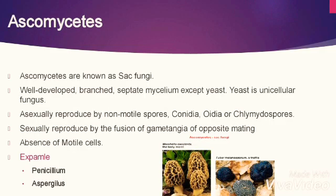The species of Ascomycetes are called sac fungi because they produce sexual spores within sac-like structures called asci. Ascomycetes are mostly terrestrial, occurring as saprophytes or parasites. They have well-developed branched septate mycelium, except yeast, which is a unicellular fungus. Asexually, Ascomycetes reproduce by non-motile spores: conidia, oidia, or chlamydospores. Sexual reproduction takes place by the fusion of gametangia of opposite mating types. There is an absence of motile cells, and examples include Penicillium and Aspergillus.